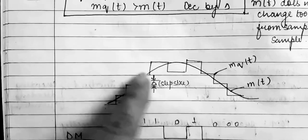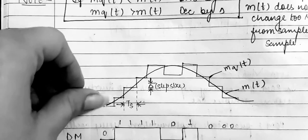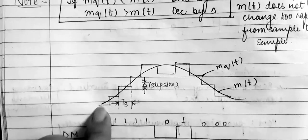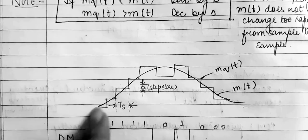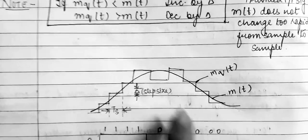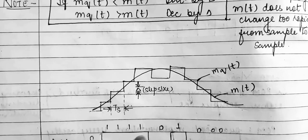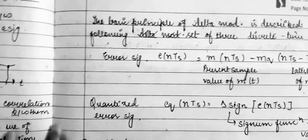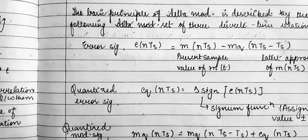We can see that where the modulating signal m(t) is greater than the staircase level mq(t), the output is zero, and where the staircase approximation mq(t) is greater than m(t), the output is one. Now coming on to the basic principle of Delta Modulation, it is described by three discrete-time relations.